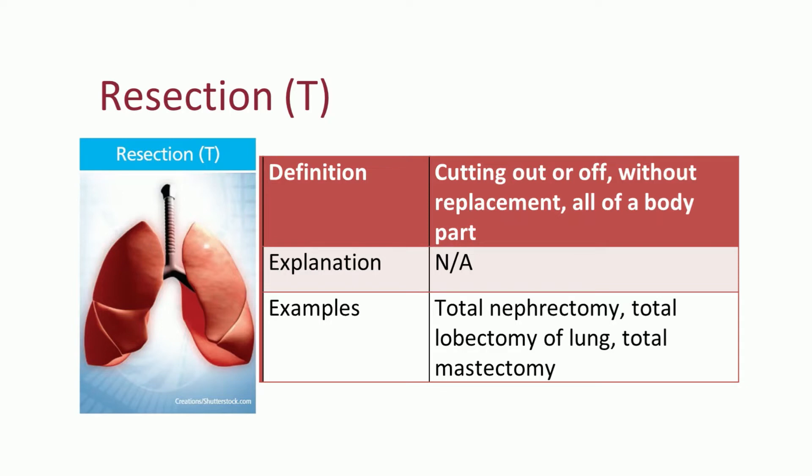Resection includes removal of all of a body part, or any subdivision of a body part that has its own body part value in PCS, whereas excision includes removal of only a portion of a body part and not the entire body part. Examples of resection include total nephrectomy, total lobectomy of the lungs, and total mastectomy.